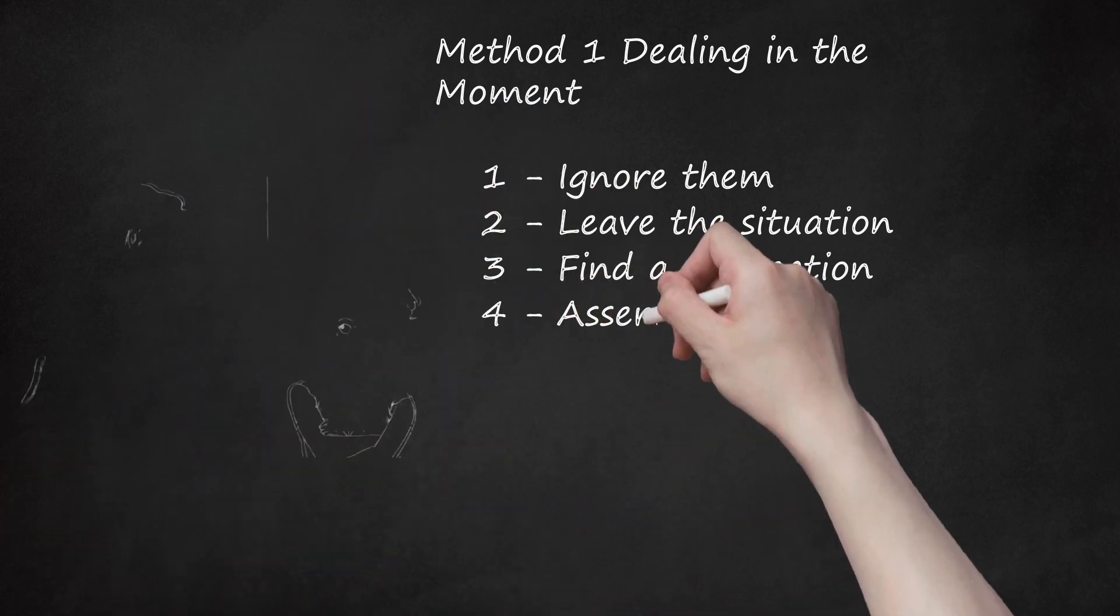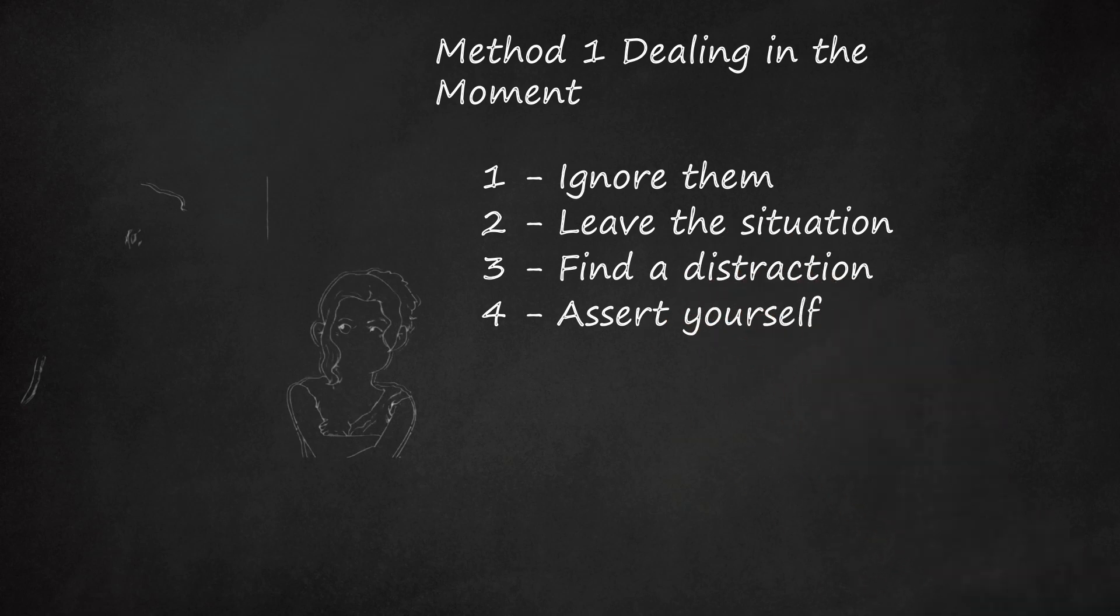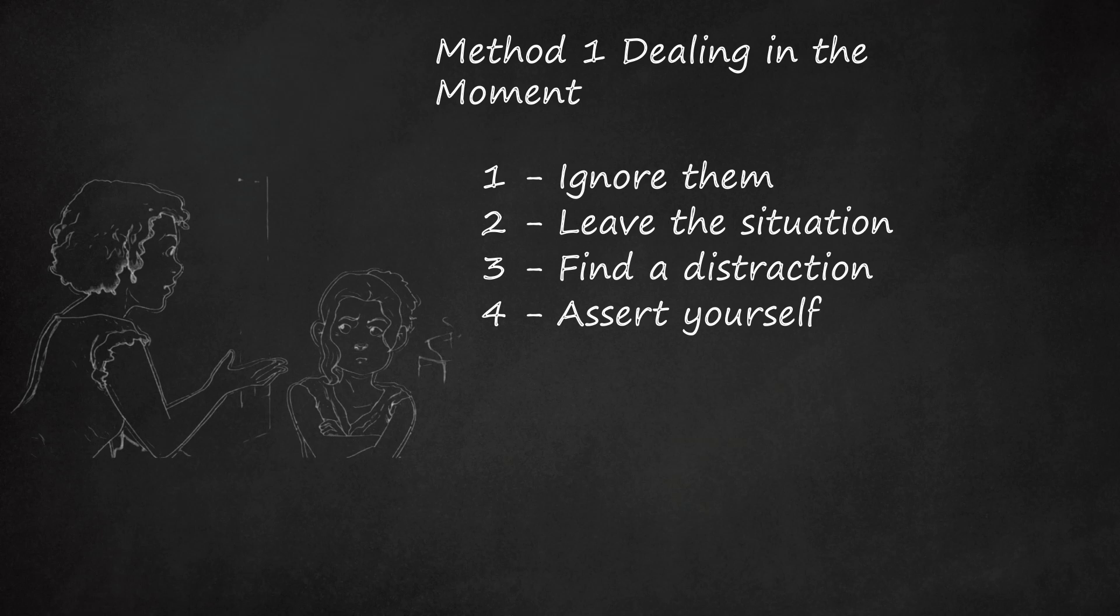4. Assert Yourself. If ignoring or avoiding doesn't work, you might have to assert yourself. Being assertive when being teased or bullied may help get your sibling to shut up. Remember, you have a right to be respected in your home. Your sibling's teasing is violating that right. It is appropriate to be assertive and stand up for yourself.